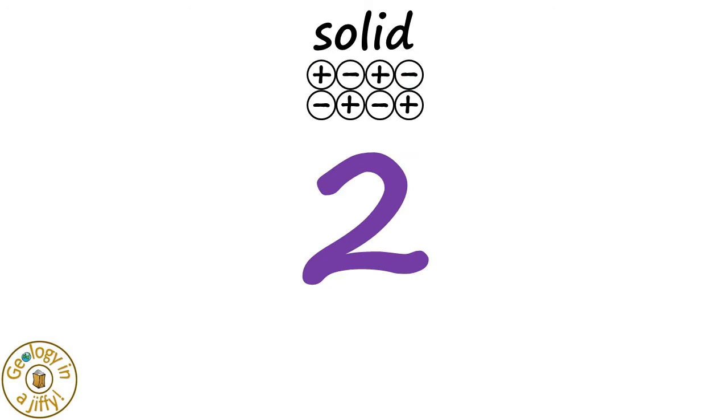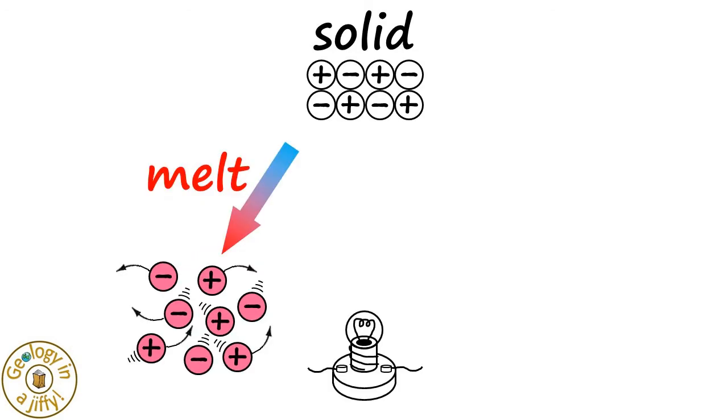But there are two things we can do to our solid to make it conduct electricity. The first is to melt it so the charged particles, the ions, are free to move about, making an electrical current and making the lamp light up.